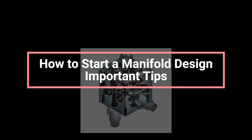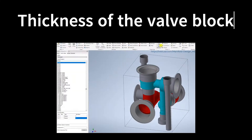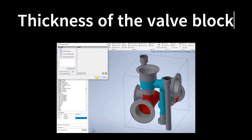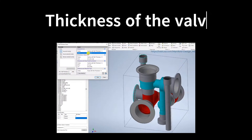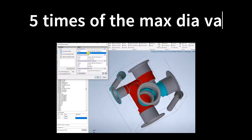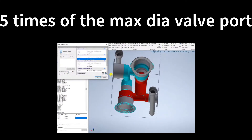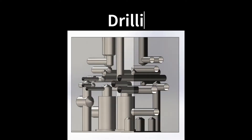So how to start a manifold design? It is important to know some tips before starting. Regarding thickness of the valve block, the initial thickness is set to be five times the maximum diameter of the valve port, then gradually reduced according to the specific requirement.